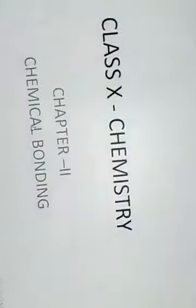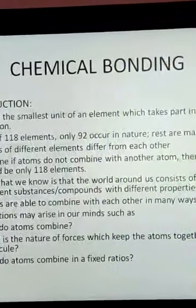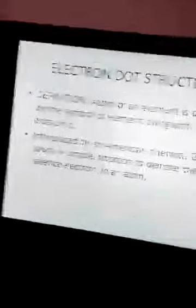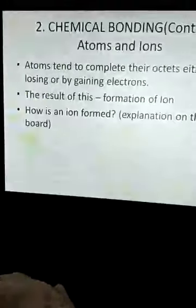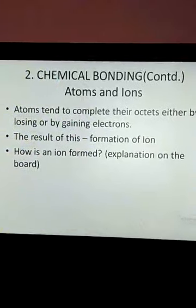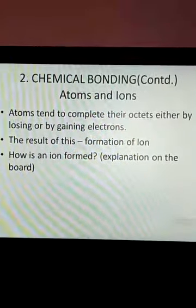And also about oxidation and reduction. So let us learn in detail. This is class 10 chemistry chapter 2, chemical bonding. We have the introduction, why atoms combine, electron dot structures, and octet rule. Today we shall learn about atoms and ions — what are atoms and what are ions, and how do they differ from each other in properties?